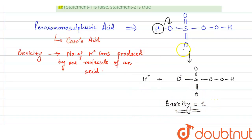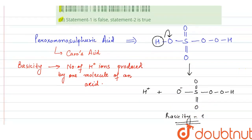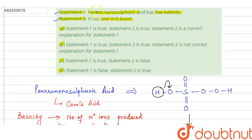If we look at other oxo acids of sulfur, they have a basicity greater than 1. So this oxo acid of sulfur has a low basicity of 1. Therefore, statement 1 — per oxo monosulfuric acid has low basicity — is true.